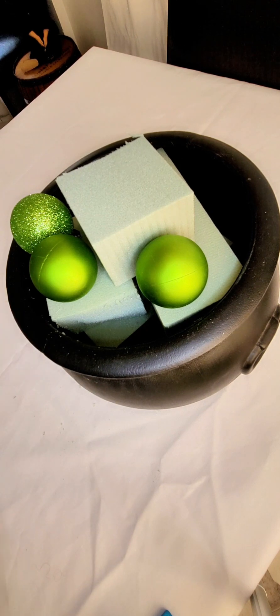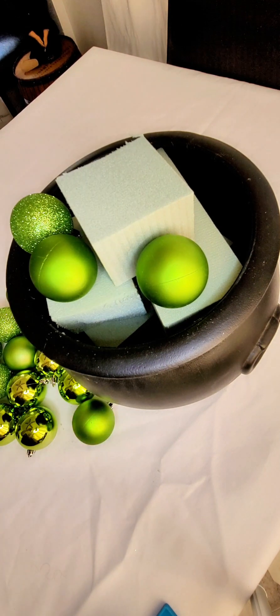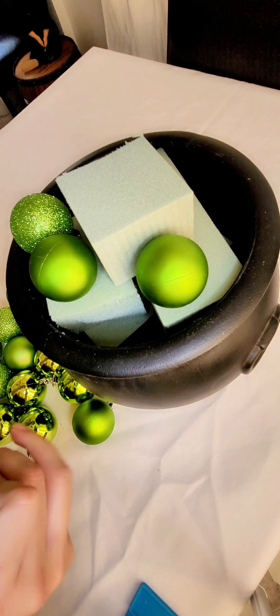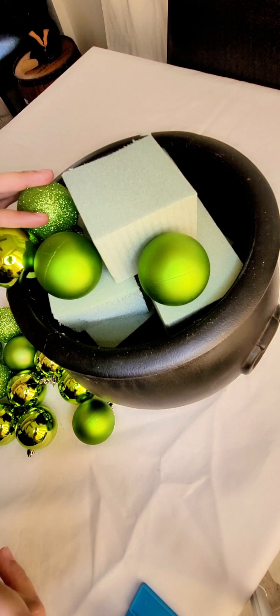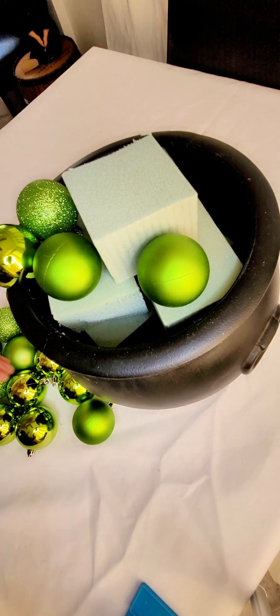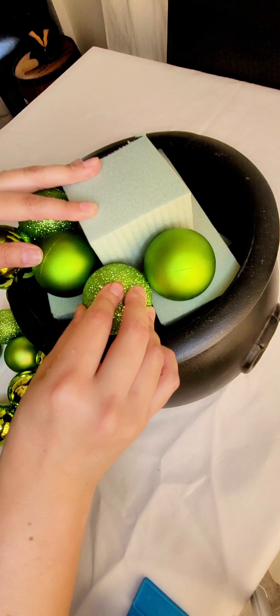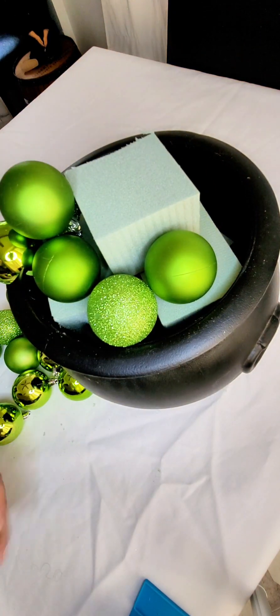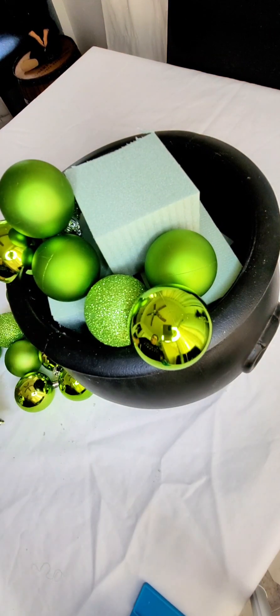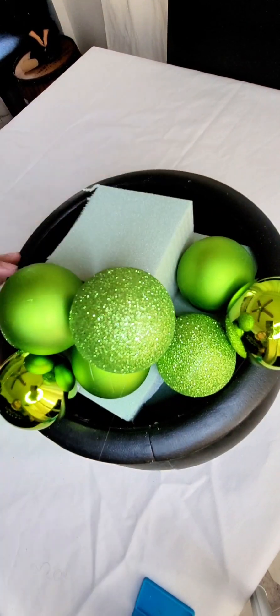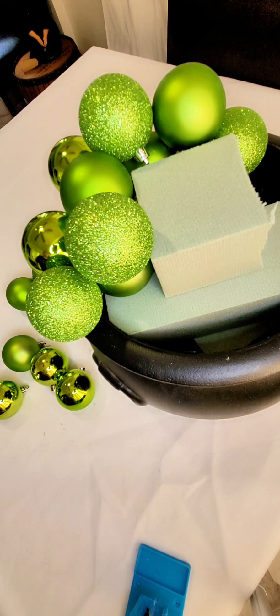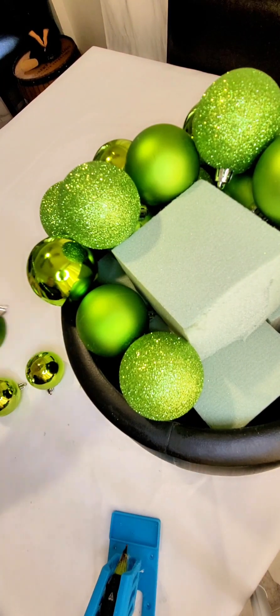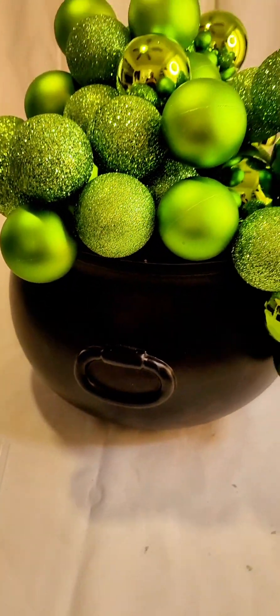This pack of ornaments also had a variety of sizes. I randomly start placing them and gluing them to the top of the cauldron. Make sure to cover any gap or space you see and press down firmly to attach them. I personally love the different textured ornaments and the different sizes - it definitely gave a more fun and whimsical effect to the cauldron.